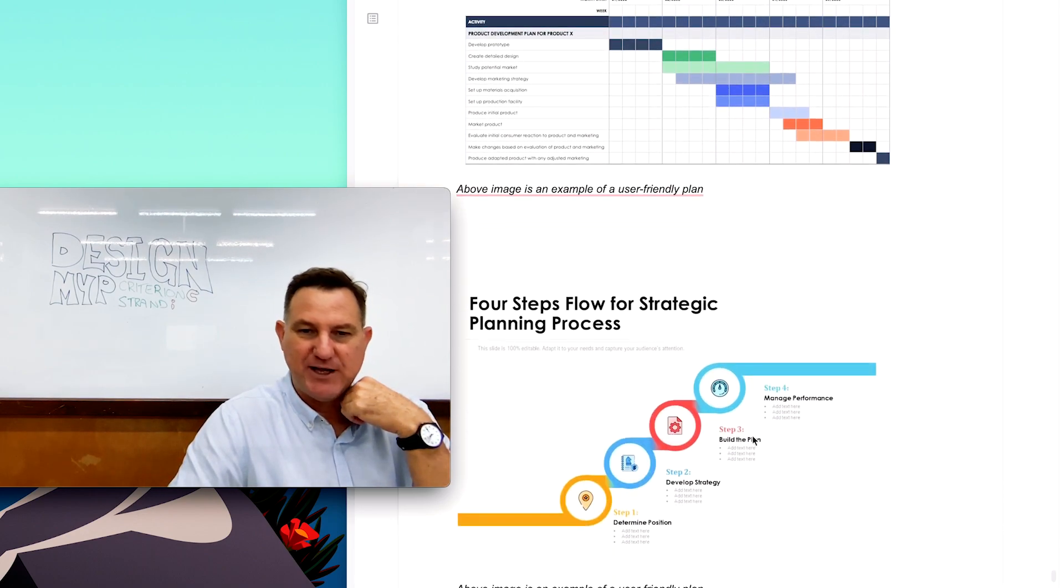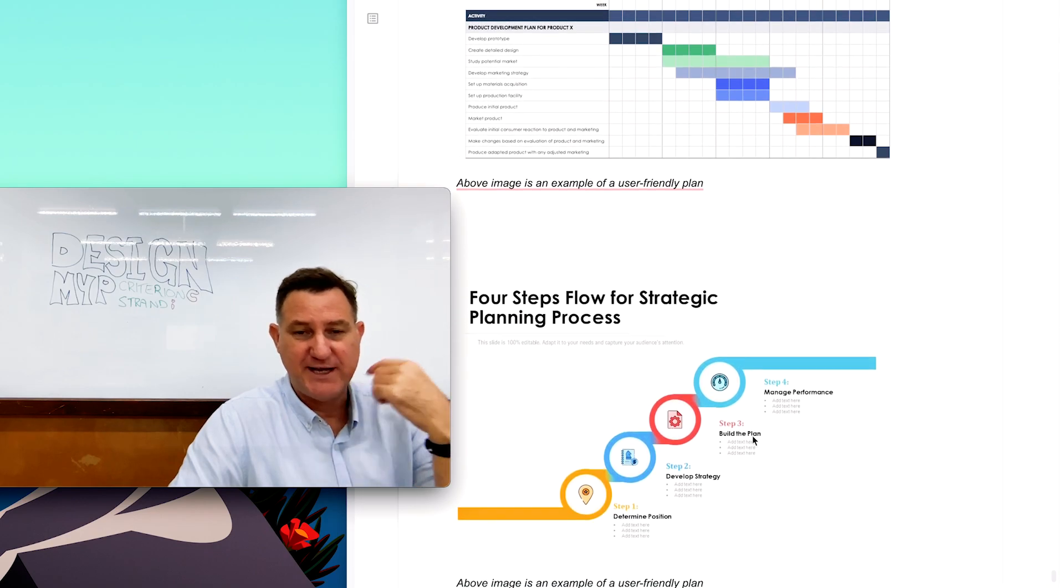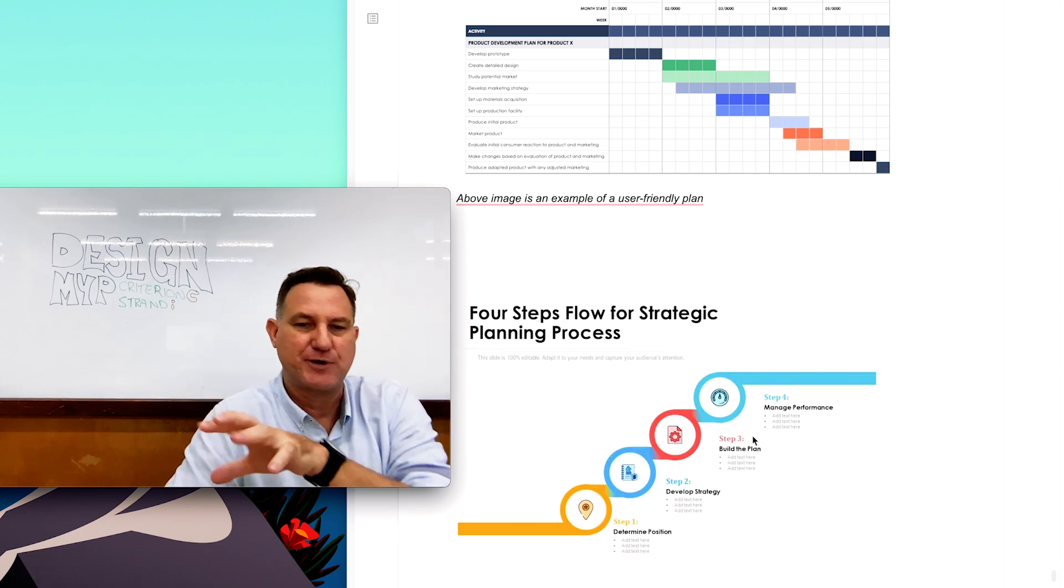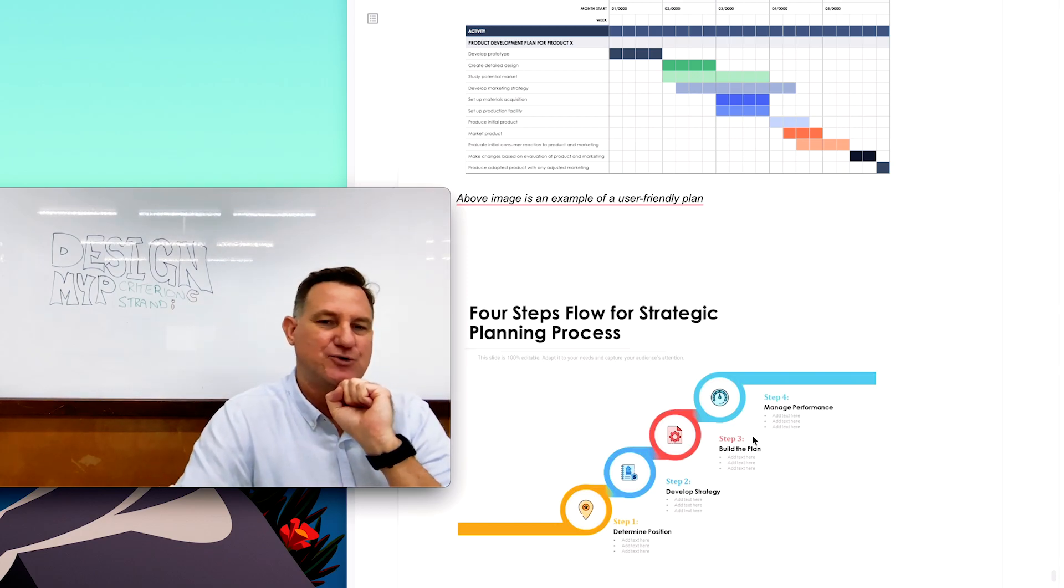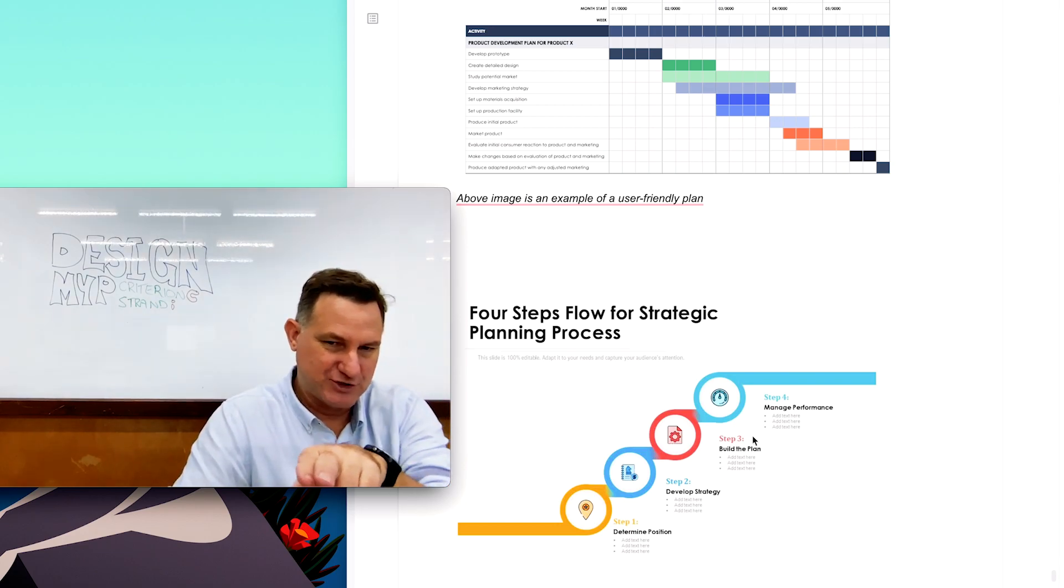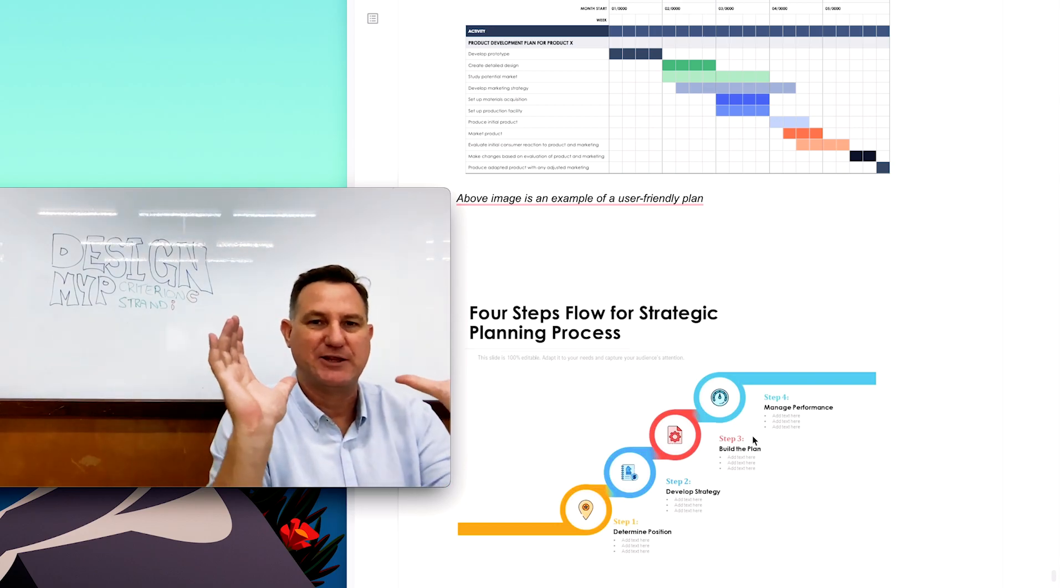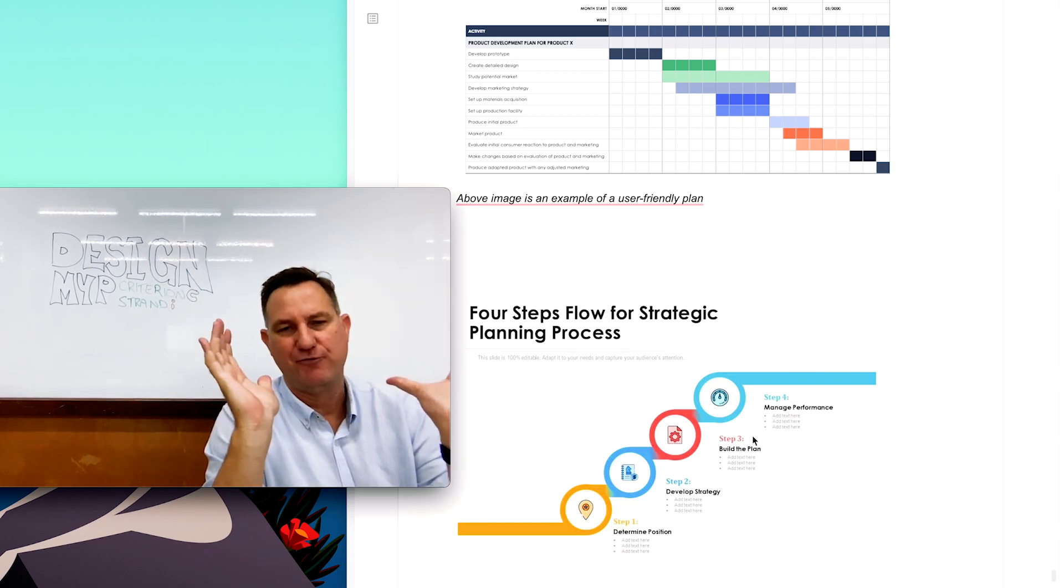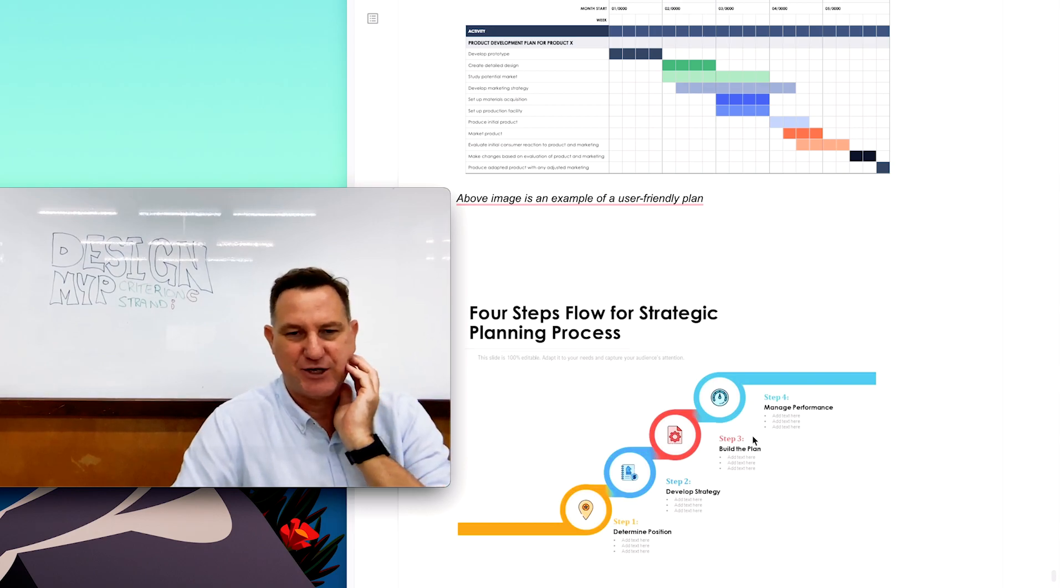Another example is a flow chart. So here's kind of a flow chart. Step by step. Step one, step two, step three. Color-coded, easy to follow. By the way, these examples here, I don't need you to pay any attention to the actual words. I just want you to get the idea of a few different styles and plans that you could actually construct.